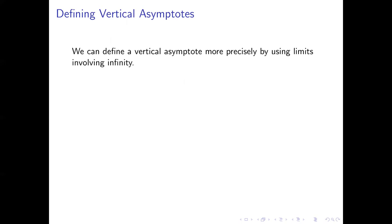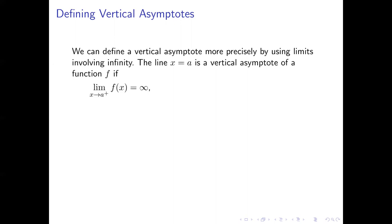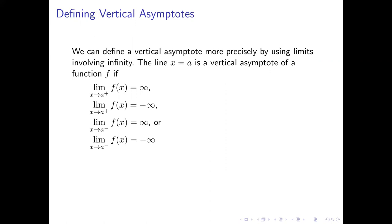Let's see how we can define vertical asymptotes using limits. We're going to use the concept of a limit involving infinity to do this. We'll say that the line x equals a — some vertical line through all points with a as the x-coordinate — is a vertical asymptote of some function f if: the limit as x approaches a from the right is infinity, or the limit as x approaches a from the right is negative infinity. We can also talk about limits as we approach a from the left and get either positive or negative infinity.